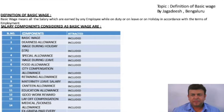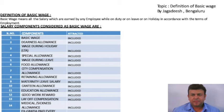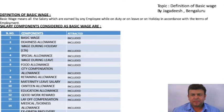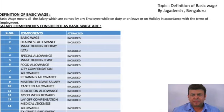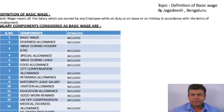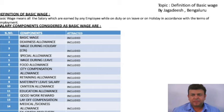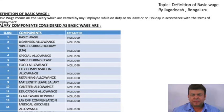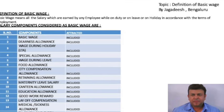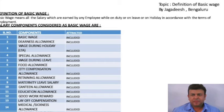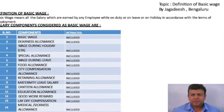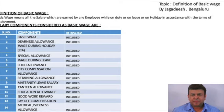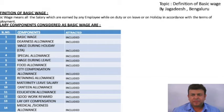The popular allowance is special allowance, and many employers are under the assumption that special allowance is not part of the basic wage and Provident Fund contribution is not necessary. But they are wrong — any allowance is considered as part of the basic wage. Not only special allowance, there are other allowances like food allowance, city compensatory allowance, retirement allowance, medical allowance, sickness allowance, canteen allowance, and education allowance. All these allowances are considered as basic wage for which Provident Fund contribution has to be made.